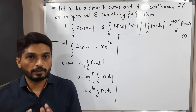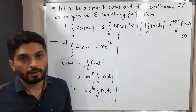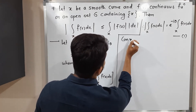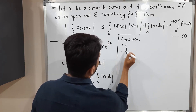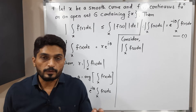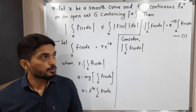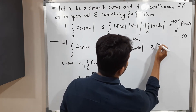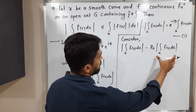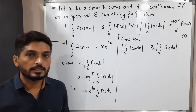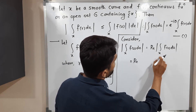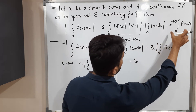Now let us focus on our target. We have to prove this inequality. We will start with the left-hand side and bring in the right-hand side. Consider |∫_x f(z) dz|. When we take the modulus, the value is a real number, so this is nothing but the real part of |∫_x f(z) dz|, since it is already real.